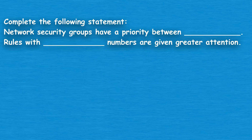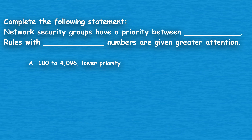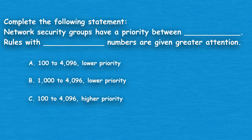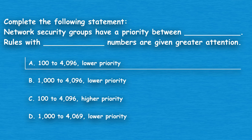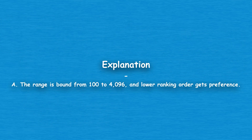The next question: complete the following statement. Network security groups have a priority between blank. Rules with blank numbers are given greater attention. Option A: 100–4,096, lower priority. Option B: 1,000–4,096, lower priority. Option C: 100–4,096, higher priority. Option D: 1,000–4,069, lower priority. The correct answer is Option A: 100–4,096, lower priority. The range is bound from 100 to 4,096, and lower ranking order gets preference.